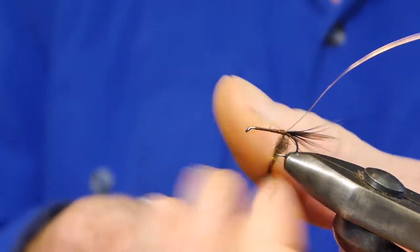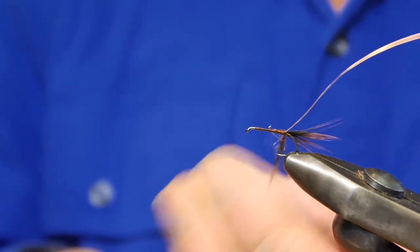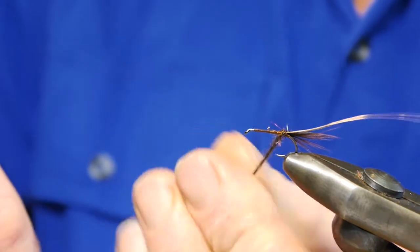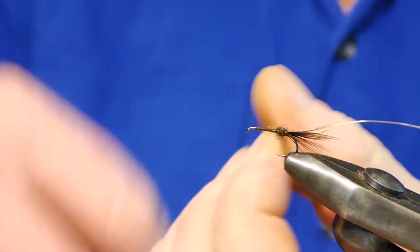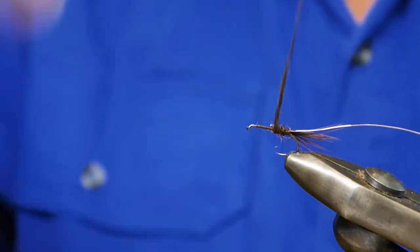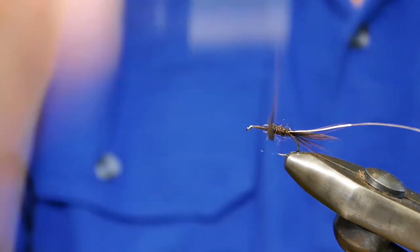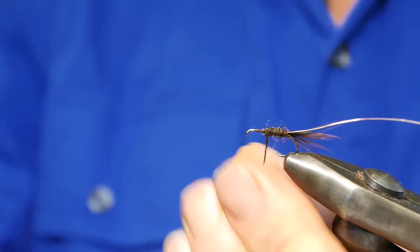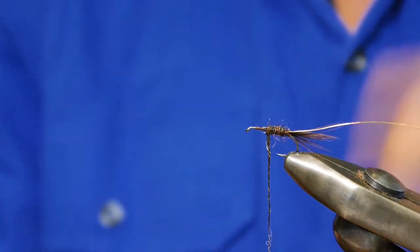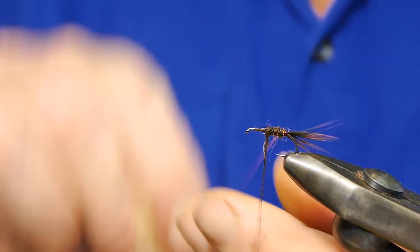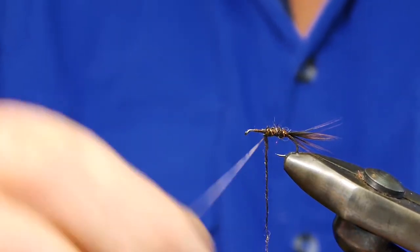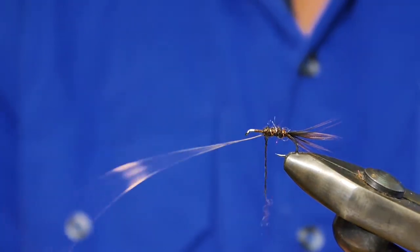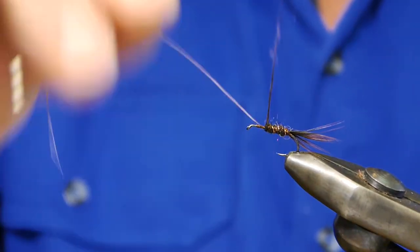So again I like a really dark nymph because that's just the color they are. Another thing about tying brown is that trout might mistake it for a stick caddis anyway. So again with my nymphs, the same as my mayflies, I like to have a lot of length to the thorax. So I usually stop about half way.